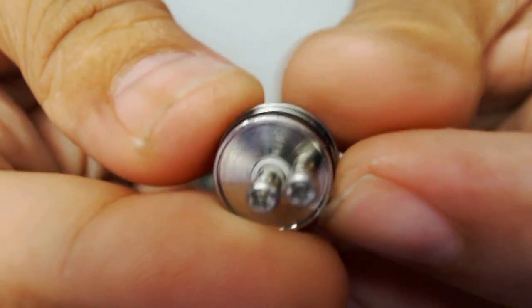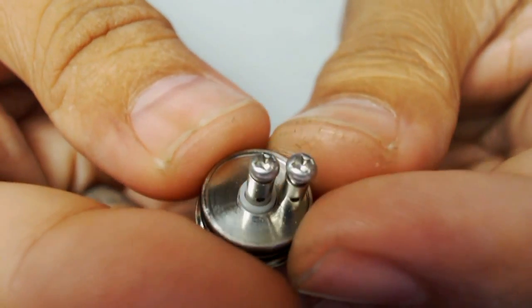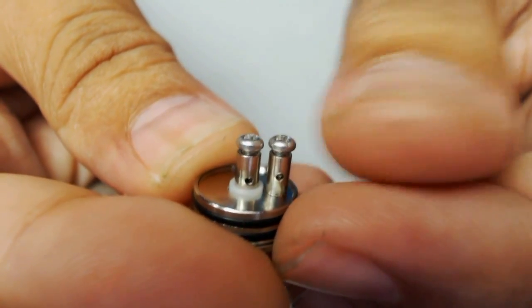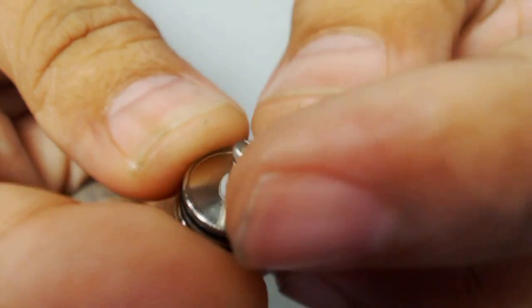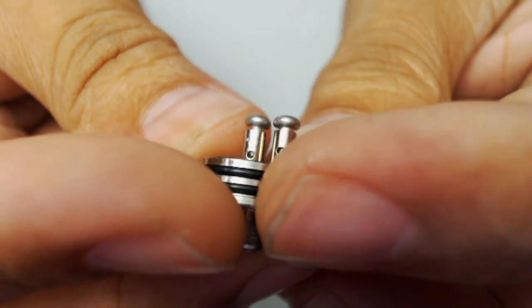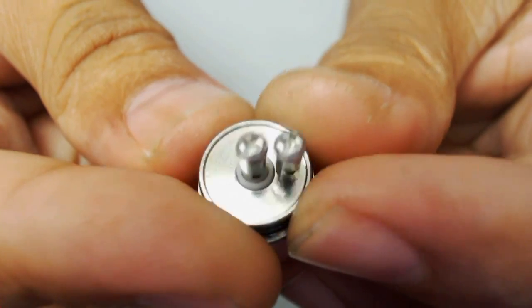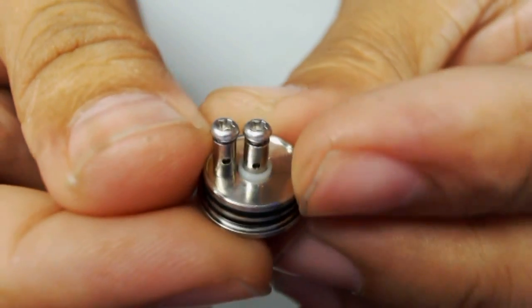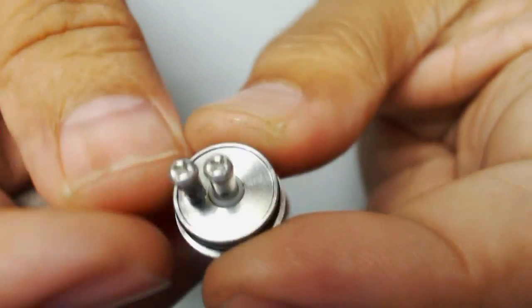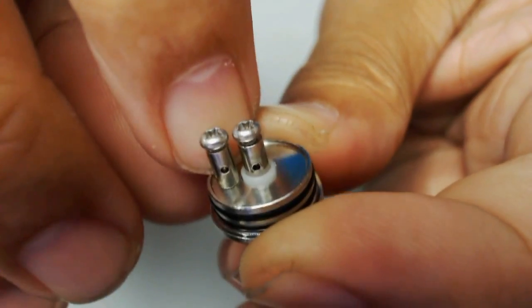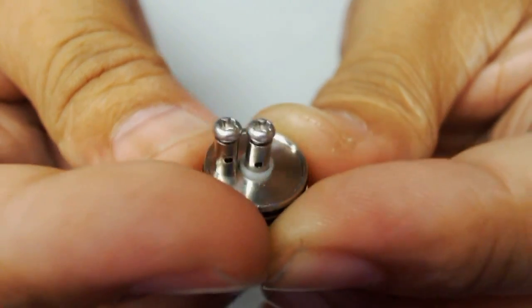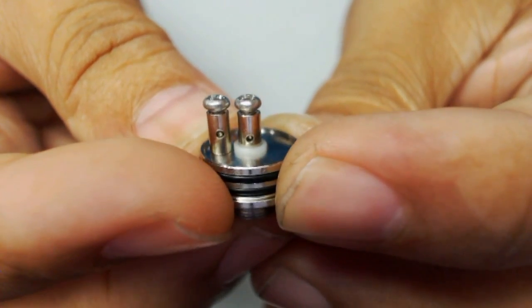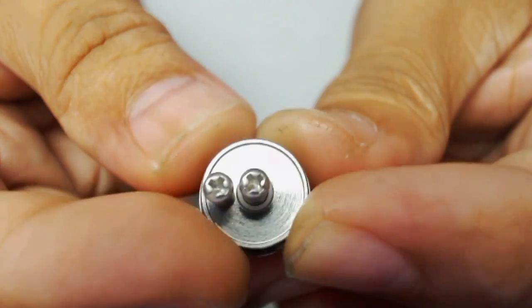The screw heads are Phillips heads, so you will not have a hard time looking for tools for this one. For the base, you will see a sort of juice well on the top part of the base.